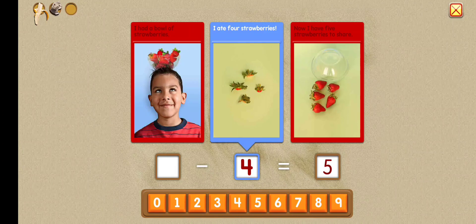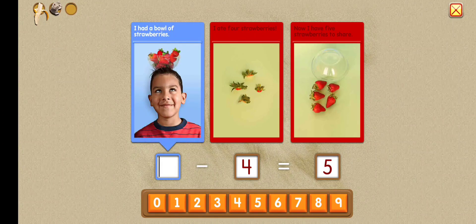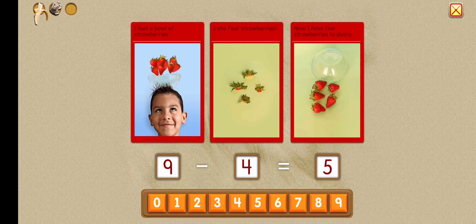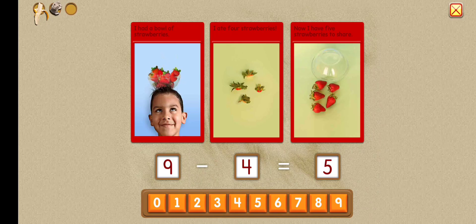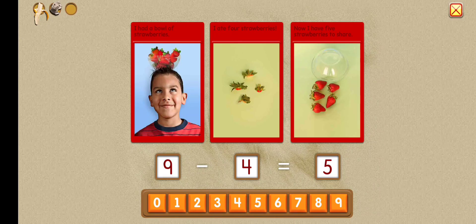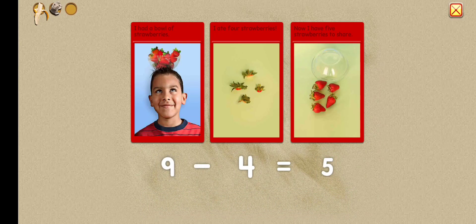Now let's solve the equation. How many strawberries did I have at the start? Nine. Nine minus four equals five. Excellent.